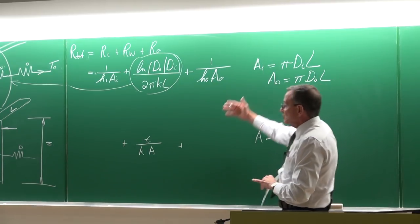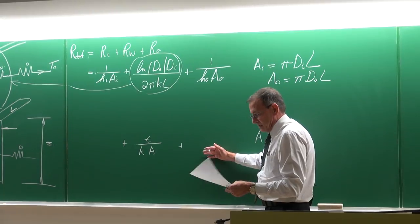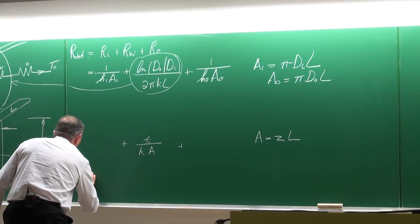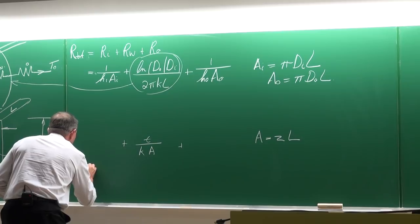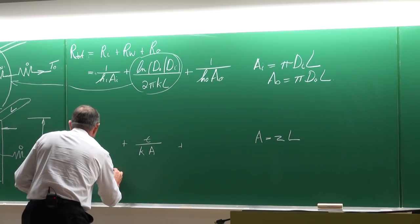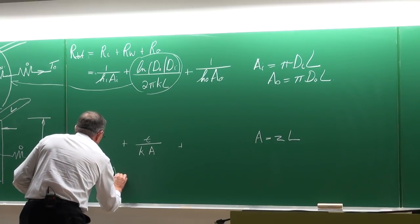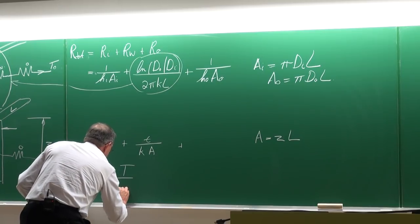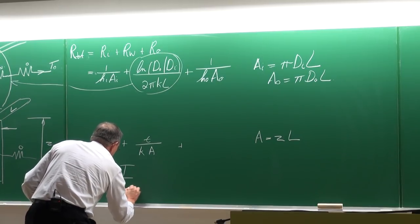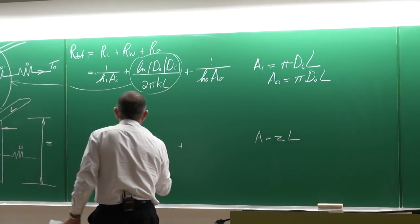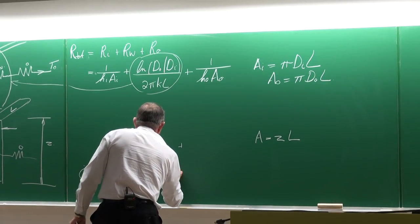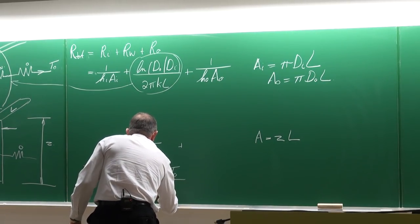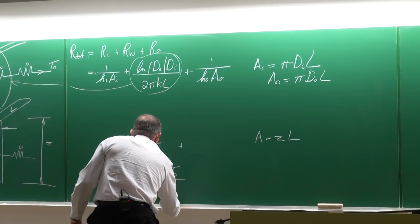The heat transfer rate for both geometries is equal to delta-T divided by the total resistance, where delta-T is the inner temperature minus the outer temperature.